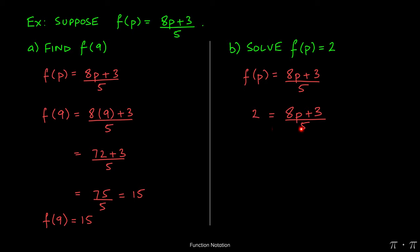Now this is a very simple linear equation that we've solved many times before. We can start by multiplying 5 on both sides, and that gives us 10 equals 8p plus 3. The 5 in the denominator cancels out.